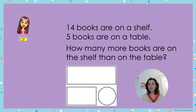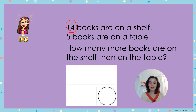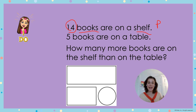So I know that I have two parts: I have 14 books on a shelf — that's one part — and I have 5 books on a table — that's my other part.